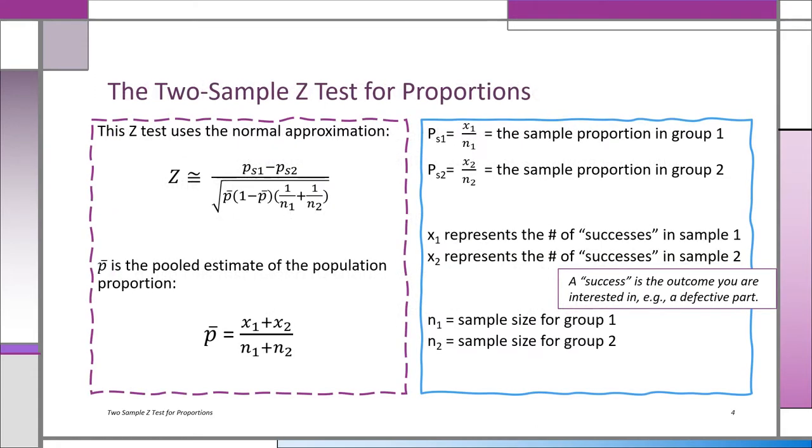This z-test is actually an approximation, which by the way is why we can't use the t if we have a small sample size, because that would be an approximation to an approximation and we don't really want to go that far. The formula you see over there: the sample proportion from group 1 minus the sample proportion from group 2, and so on.